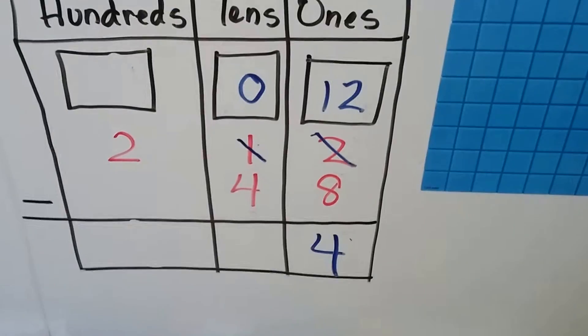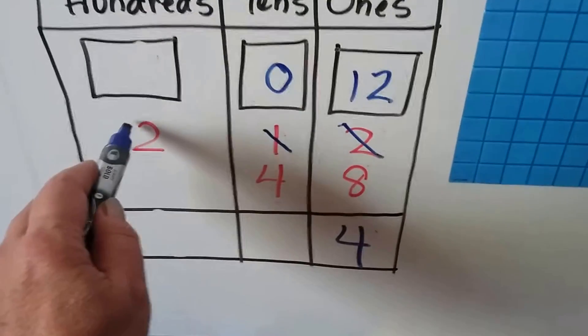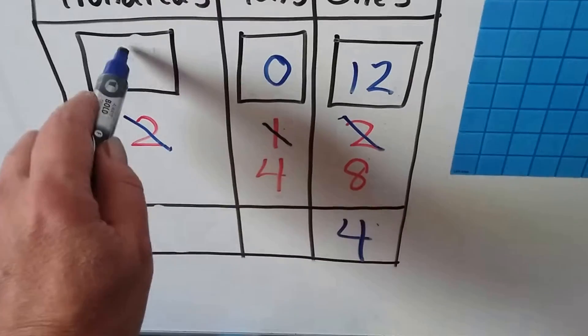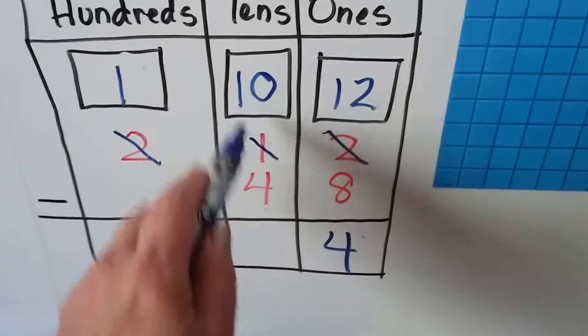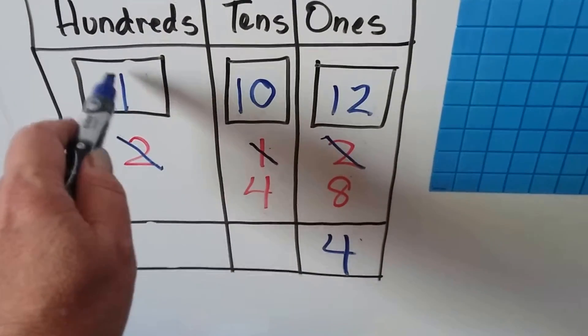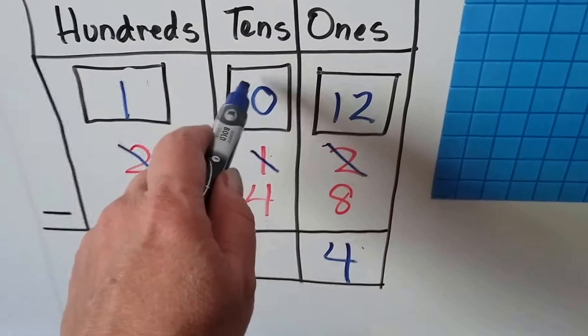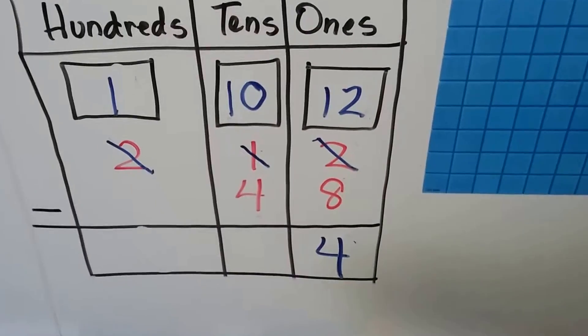But now we have zero and need to take 4 away. So the tens say to the hundreds, hey, can I borrow one? He says, sure. So now he becomes a 1 and instead of zero tens, we have 10 tens. 10 tens make 100. So by taking one of these hundreds away, it gave 10 tens to the tens column. I know it can sound confusing. Stick with me.